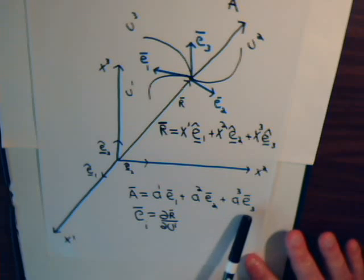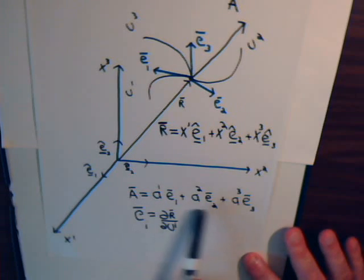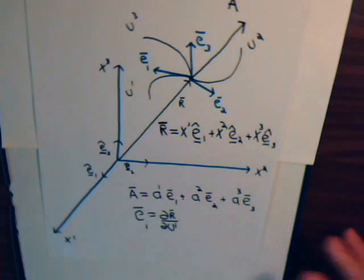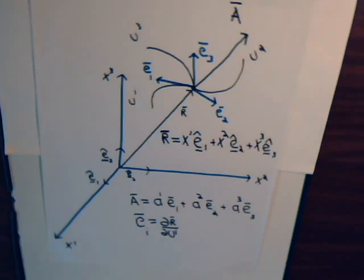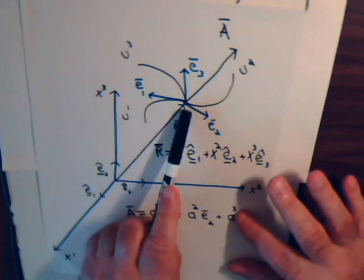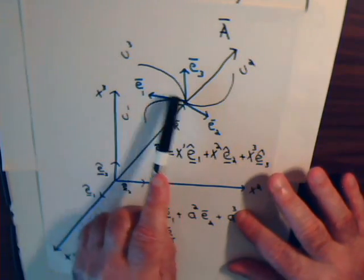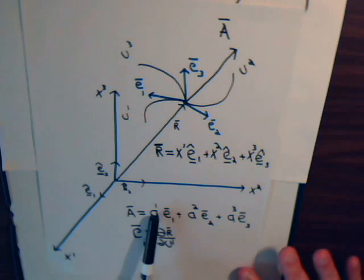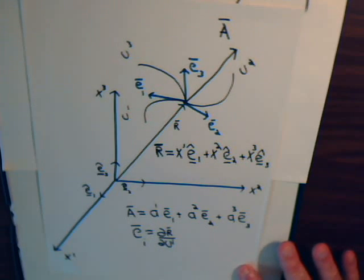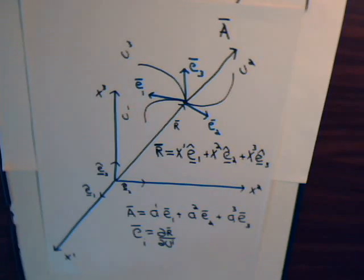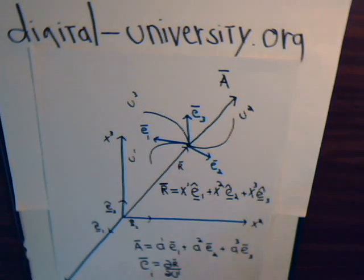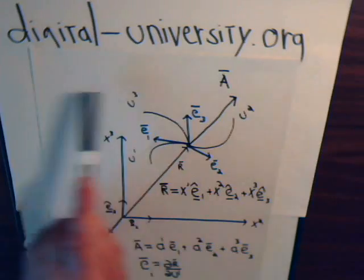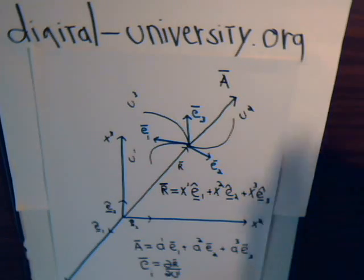This right here is really the basic definition of a contravariant vector, where we have the components along each particular coordinate axis labeled with superscripts. A reminder that the playlist for all the videos is at the website digital-university.org.